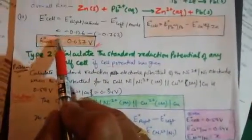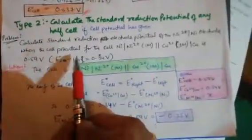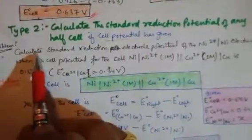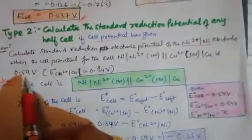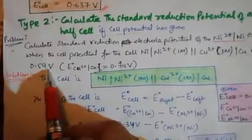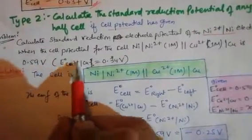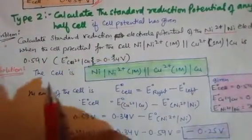Now let's talk about Type 2 numericals: calculate the standard reduction potential of a half-cell when the complete cell potential is already given. For example, calculate the standard reduction potential of the Ni²⁺/Ni electrode when the cell potential for Ni | Ni²⁺ (1M) || Cu²⁺ (1M) | Cu is 0.59 volt. We know E°(Cu²⁺/Cu) = 0.34 volt.